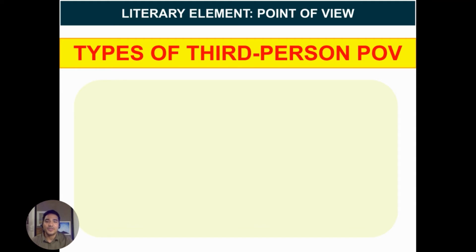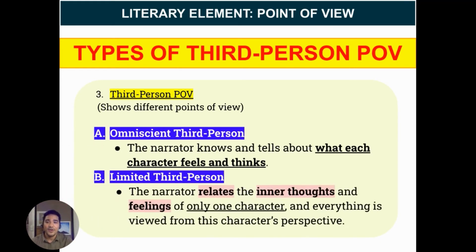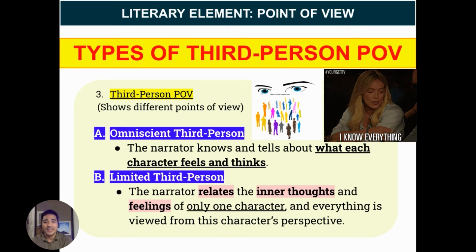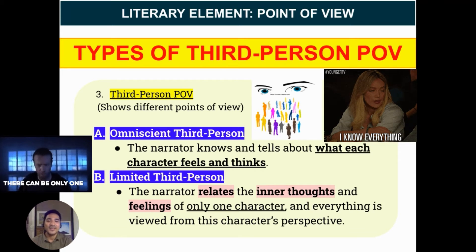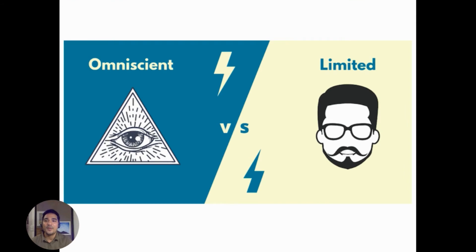Let's talk about the types of third person point of view. Third person point of view shows different points of view. Under that, we have omniscient third person and limited third person. Omniscient third person means the narrator knows and tells about what each character feels. On the other hand, limited third person means the narrator relates the inner thoughts and feelings of only one character, and everything is viewed from this character's perspective. Remember: if it's omniscient third person, the narrator knows everything; if it's limited, it's focused on only one specific character.